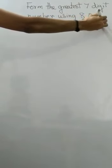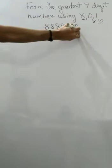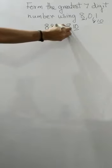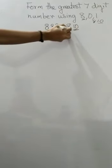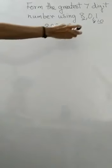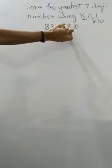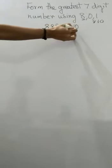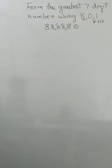So what will you do? See the descending order: 8, 1, 0. So 1 and 0 come at the end. The rest of the 7 digit number — you need 5 more digits — you write 5 eights and then 1 and 0. That gives you the greatest 7 digit number. Is it clear? You will write 5 eights and then 1 and 0. This is how you form the greatest 7 digit number.